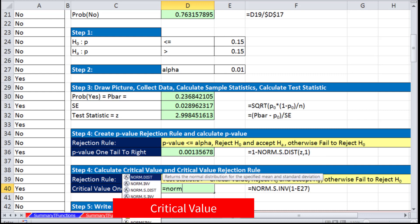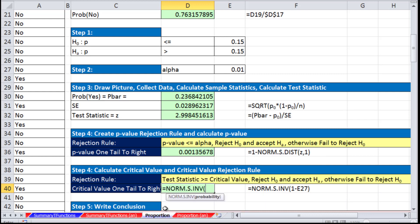NORM.S.INVERSE—our probability, we're on the upper end, so we need to say 1 minus our alpha. Our critical value is 2.32. Comparing that, any time our test statistic is greater than or equal to this, we reject the null and accept the alternative.